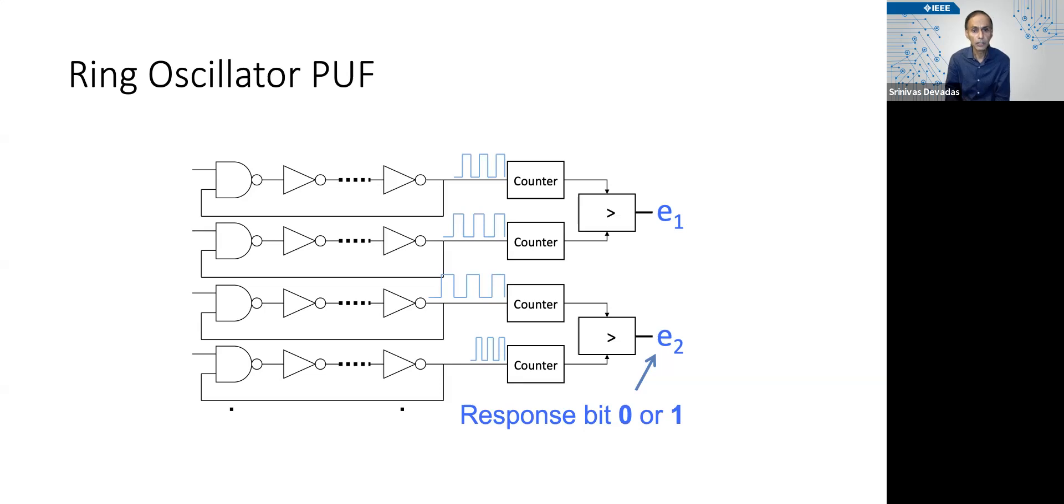You have the top two ring oscillators that are going to oscillate with slightly different frequencies, even on the same chip, and definitely every ring oscillator in different chips will have its own unique frequency if it's measured to a fine enough precision.